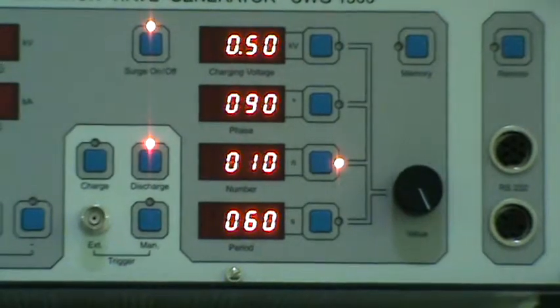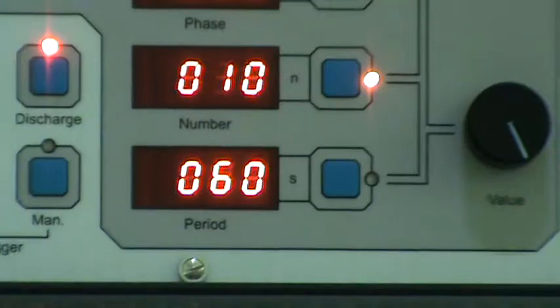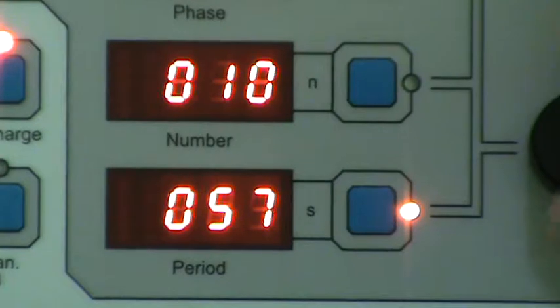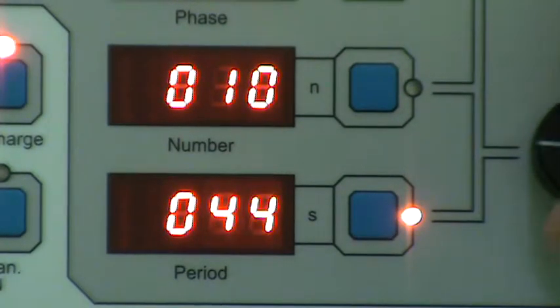After selecting the number of pulses we need to select the period. By pressing this button and rotating this knob, we can select the period for surge testing. Let us select it to 10 seconds.